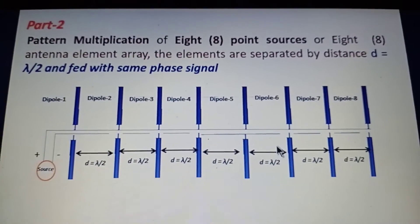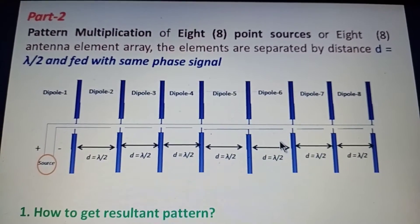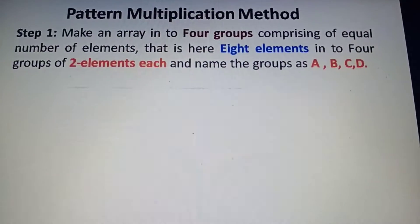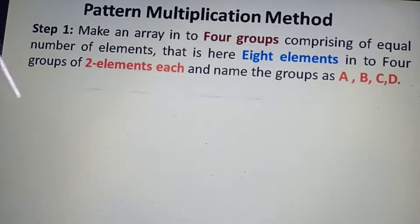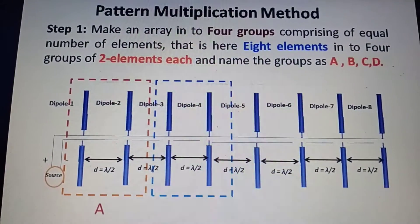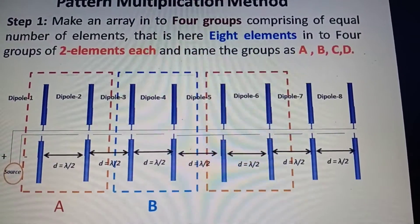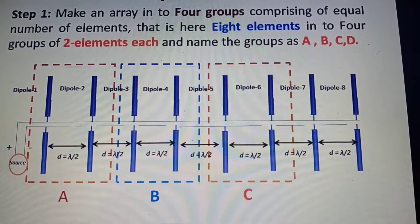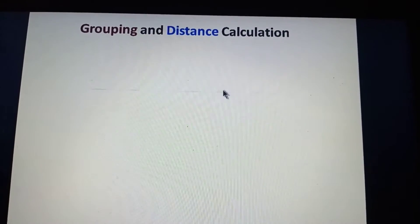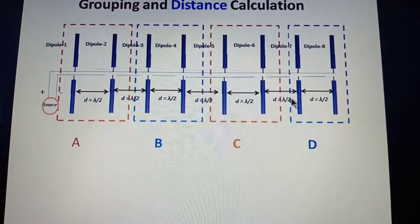In the first step we divide these eight elements into four groups, each group containing two elements. Group A contains dipoles one and two, group B contains dipoles three and four, group C contains dipoles five and six, and group D contains dipoles seven and eight. We then calculate the distance between these four groups.